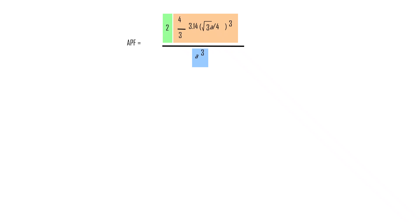Now put the value of pi in the equation. APF is equal to 2 atoms multiplied by 4 by 3 pi, its value is 3.14 into root 3a by 4 its cube. Now, do the calculations. APF will be equal to 2 multiplied by 4 into 3.14 root 3 its cube is nothing but 5.19 multiplied by a cube divided by 3 from here 3 multiplied by 4 cube is nothing but 64. So, 3 multiplied by 64 divided by a cube.